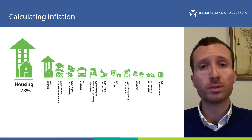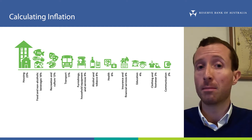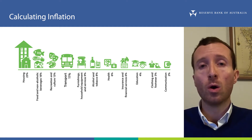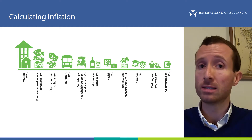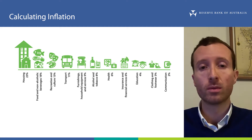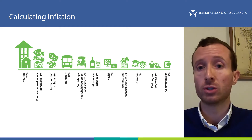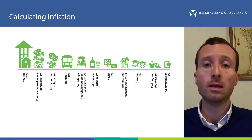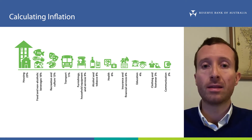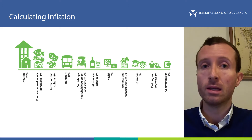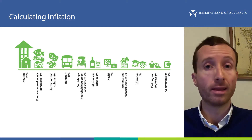The other groups represent progressively smaller shares of household spending, for example food and transport, all the way down to communication, which includes things like your mobile phone bills. You may find it difficult to match this breakdown with the expenditures of your own household. It is important to remember that these are average numbers, and that each household will be different — for example, the number of people in the household, their age, and where they live.